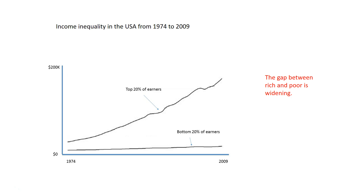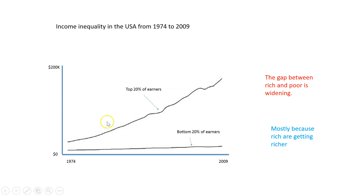Let's begin with this graph. This is the trend of income inequality in the United States from 1974 to 2009. This graph shows us that the bottom 20% of earners have remained pretty much the same, earning about the same amount of money over the time. But the top 20% of earners have increased their income profoundly, almost linearly, in this 30-year period. It shows that the gap between rich and poor is widening, and it's due mostly to gains amongst the rich. The poor have remained the poor — it's the rich who are getting richer.